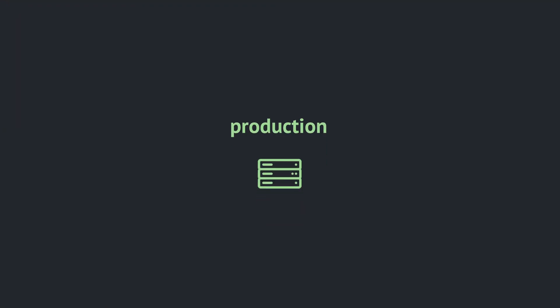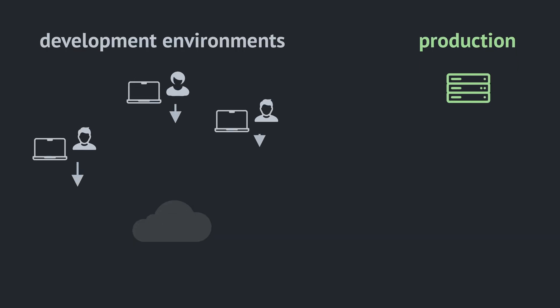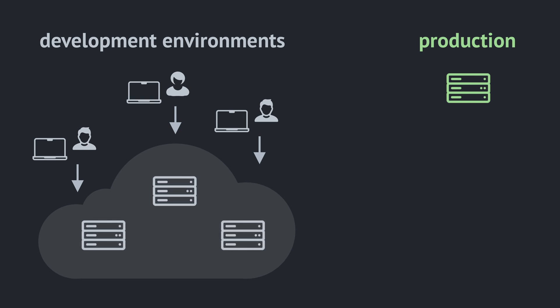Let's look at all the environments where our app can be deployed. First, there is production. Most web apps have only one production environment, but some have many — in particular, apps that customers can install on premises in their network. Next, there are development environments where engineers write and debug code. Each developer has their own development environment so they do not interfere with each other — it can be on their machine or in the cloud. Now, there could be a third type of environment: staging, somewhere between development and production.